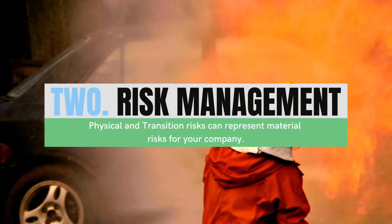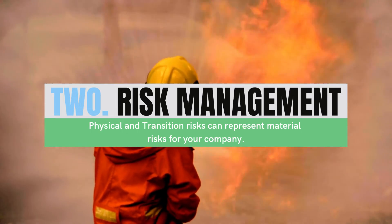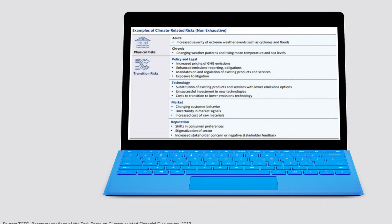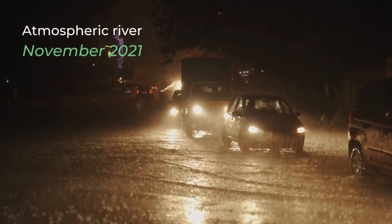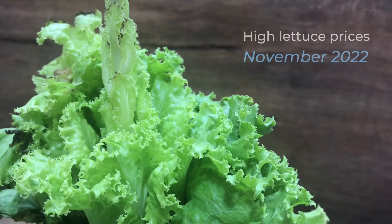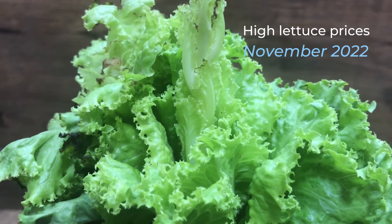Physical and transitional risks can represent a real problem if you're not careful. If your firm is not paying attention, a new regulation may creep up, or one of your offices may be in a region impacted by wildfires or extreme drought. Getting staff or materials is hard and it impacts your bottom line. In late 2021, Vancouver was practically cut off from the rest of Canada due to rainfall from an atmospheric river, causing crippling supply chain disruptions. The price of lettuce spiked in late 2022 due to supply shocks caused by droughts in California.